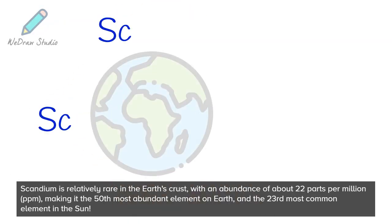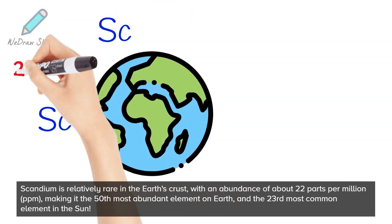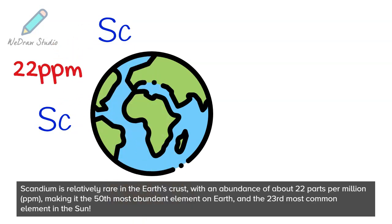Scandium is relatively rare in Earth's crust, with an abundance of about 22 parts per million, making it the 50th most abundant element on Earth and the 23rd most common element in the Sun.